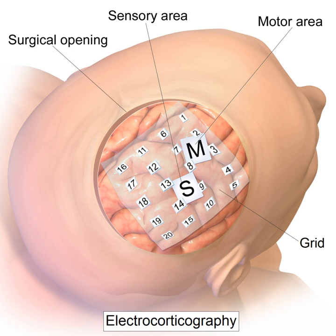ECoG signals are composed of synchronized postsynaptic potentials recorded directly from the exposed surface of the cortex. The potentials occur primarily in cortical pyramidal cells, and must be conducted through several layers of the cerebral cortex, cerebrospinal fluid, pia mater, and arachnoid mater before reaching subdural recording electrodes placed just below the dura mater. To reach the scalp electrodes of a conventional EEG, electrical signals must also be conducted through the skull, where potentials rapidly attenuate due to the low conductivity of bone.